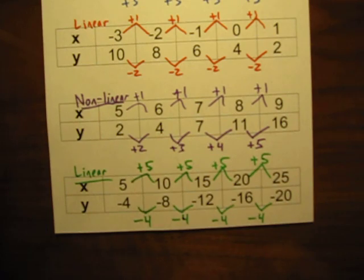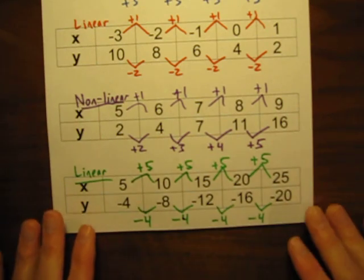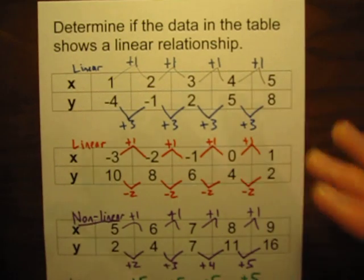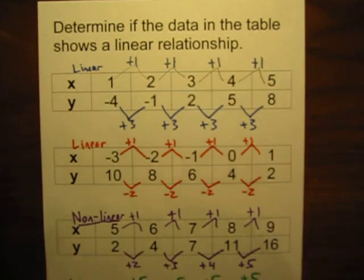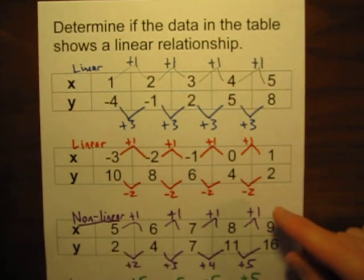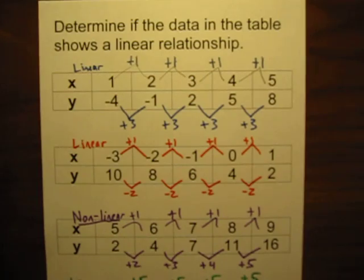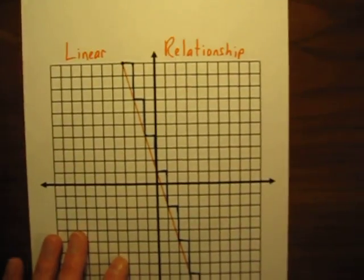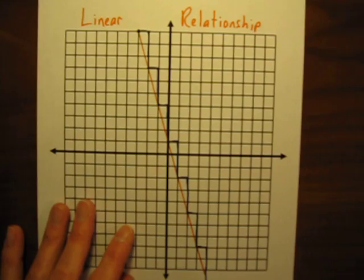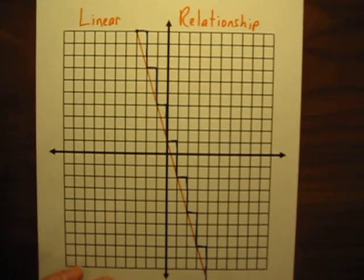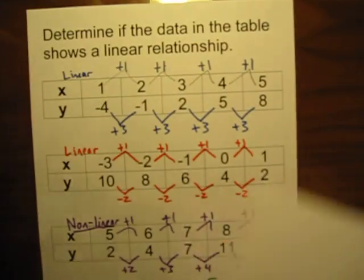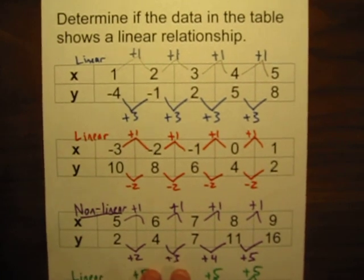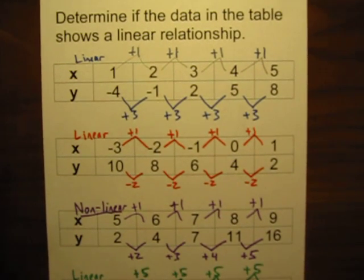When you are looking for linear relationships, you want to look for that constant rate of change. If you are looking at data tables, you can see that by looking at how the numbers are increasing or decreasing over time. And if you are looking at a graph, you will want to look for that constant slope, making it a straight line. Hopefully you will have some success as you attempt to look at your own data tables.